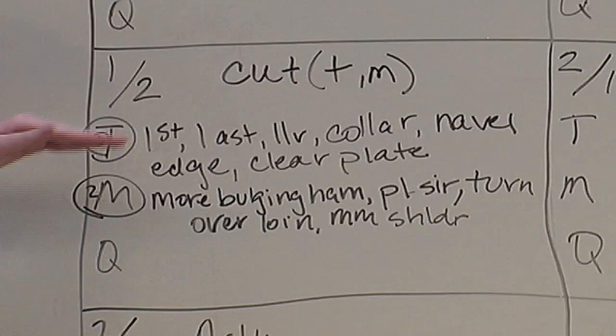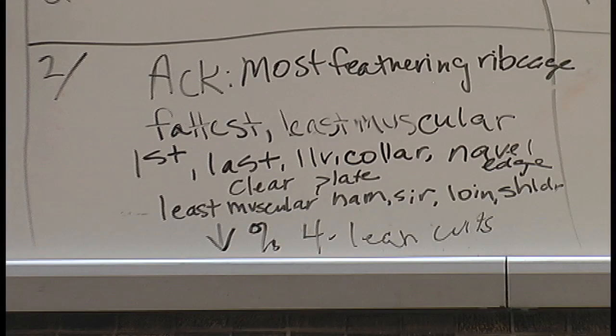In my bottom pair I placed 1 over 2, as one was a trimmer, more muscular, higher cut-ability carcass. One possessed less fat opposite the first rib, last rib, last lumbar vertebra, over the collar, along the navel edge, and over the clear plate. Additionally, one had a more bulging ham, a thicker loin, a plumper sirloin, and a more muscular shoulder. Acknowledging that two had the most feathering in the rib cage, I nonetheless placed two last, as two was the fattest, least muscular carcass. Two possessed the most fat opposite the first rib, last rib, last lumbar vertebra, over the collar, along the navel edge, and over the clear plate. Additionally, two had the least muscular ham, sirloin, loin, and shoulder. Therefore, two would yield the lowest percentage of the four lean cuts, and thus placed last.